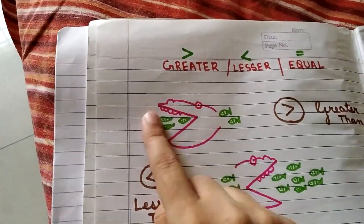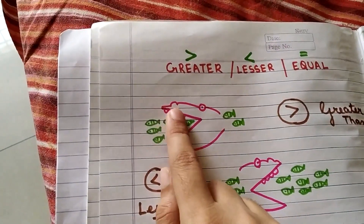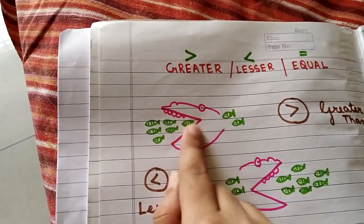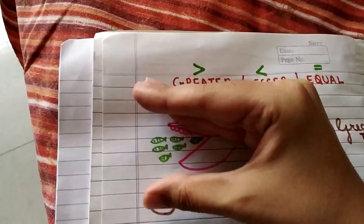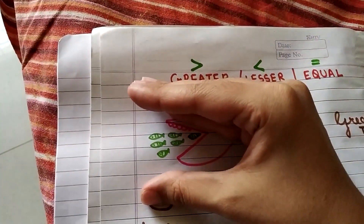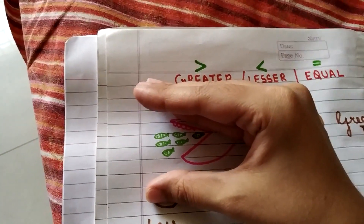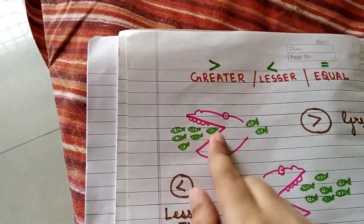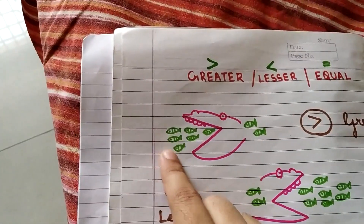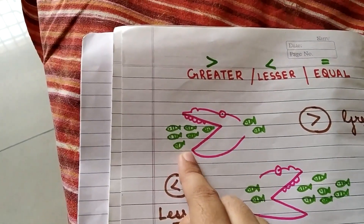So this is the crocodile. With the help of the crocodile's mouth I have tried to tell you that the mouth is open on the side where there is more number of fishes.